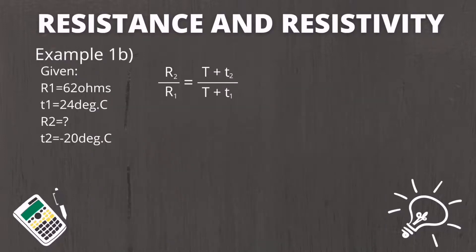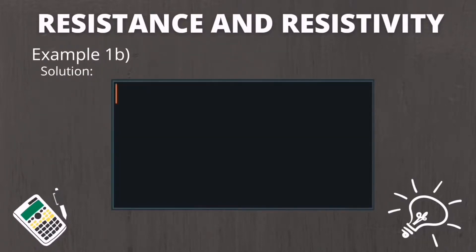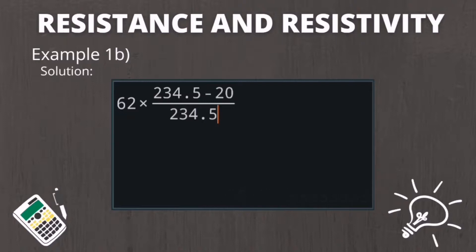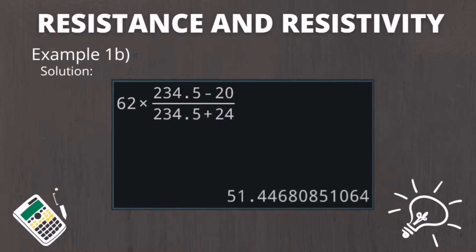For Example 1b: R1 equals 62 ohms, T2 equals negative 20 degrees Celsius, T1 equals 24 degrees Celsius, and constant T is 234.5. Solving the equation: R2 equals 62 times (234.5 minus 20) over (234.5 plus 24). Using the calculator, we get 51.5 ohms.